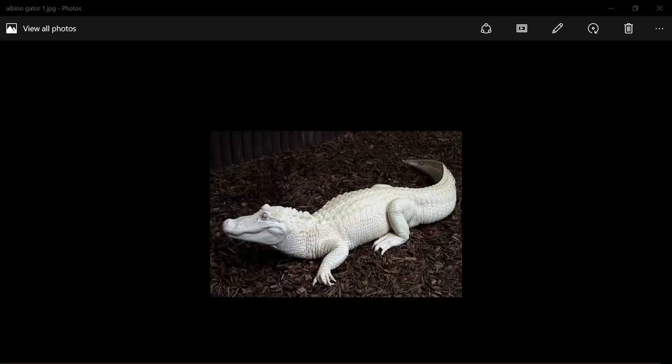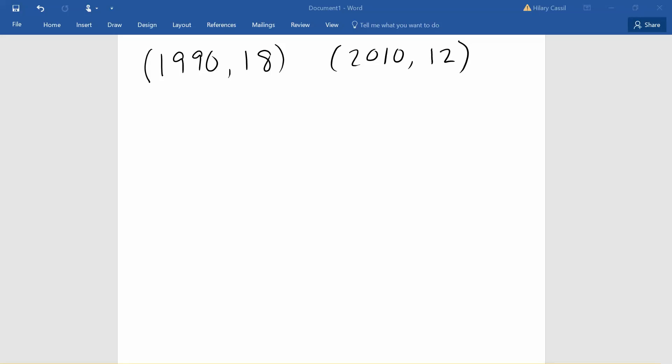So what we're going to consider here is the rate of change and percent change for the number of albino alligators over the past several years. What I found out was that in 1990 there were around 18 albino alligators and in 2010 that number was down to only about 12.